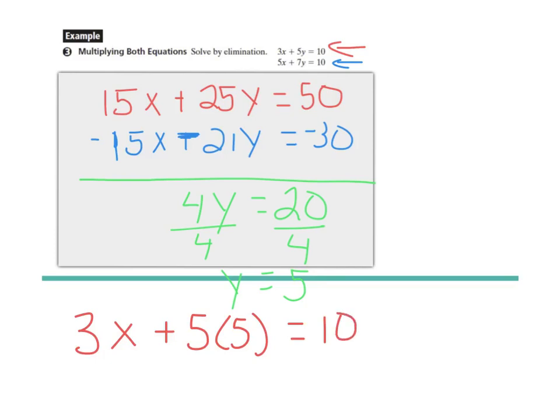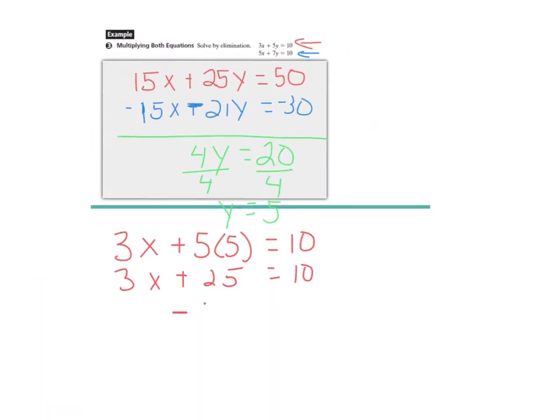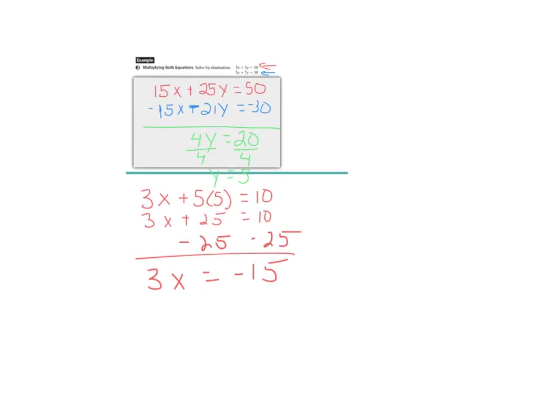And then I am solving 3x plus 25 equals 10. Subtract 25 from both sides, and I get 3x equals negative 15. Divide both sides by 3, and I get x equals negative 5.